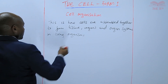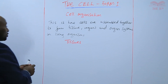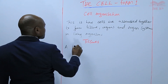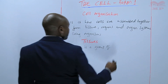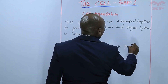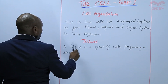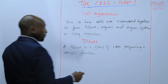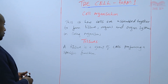The first level of organization are the tissues. A tissue is a group of cells performing a specific function.